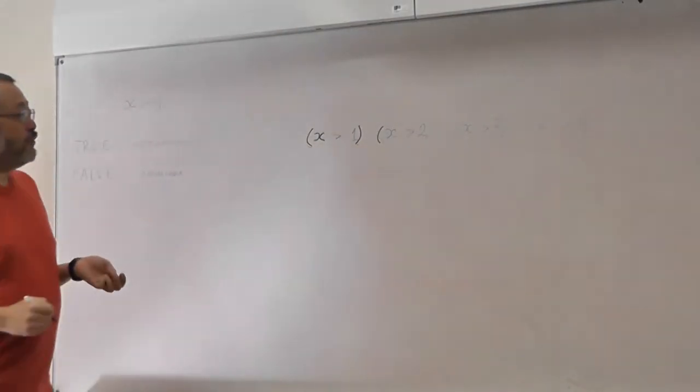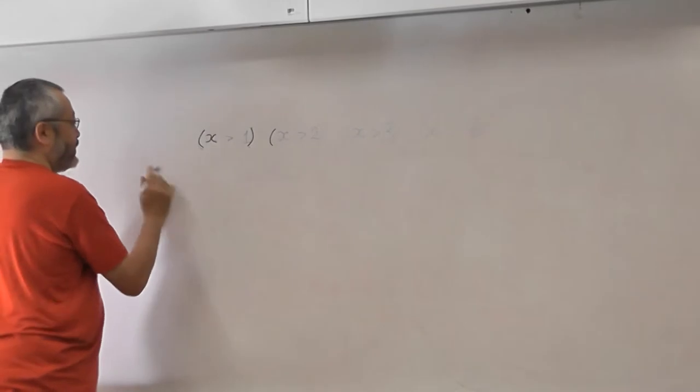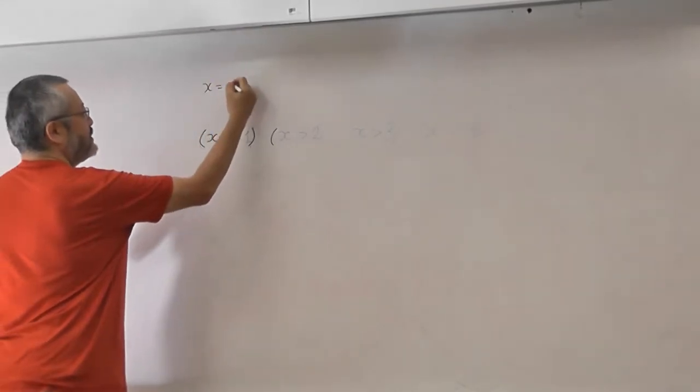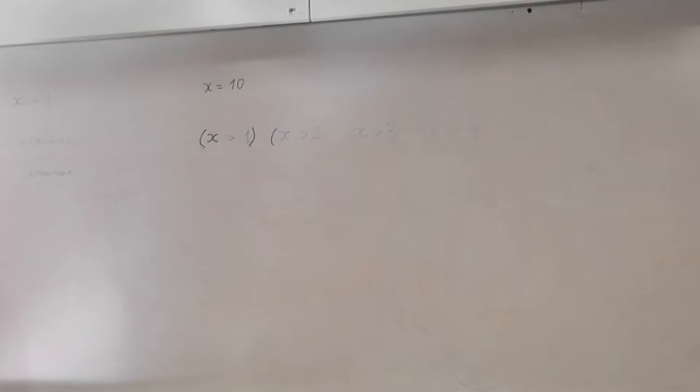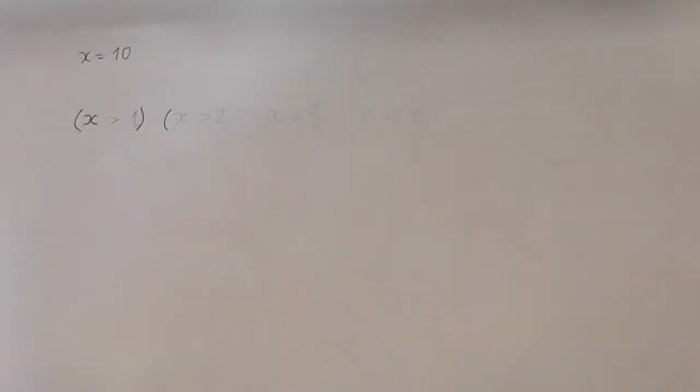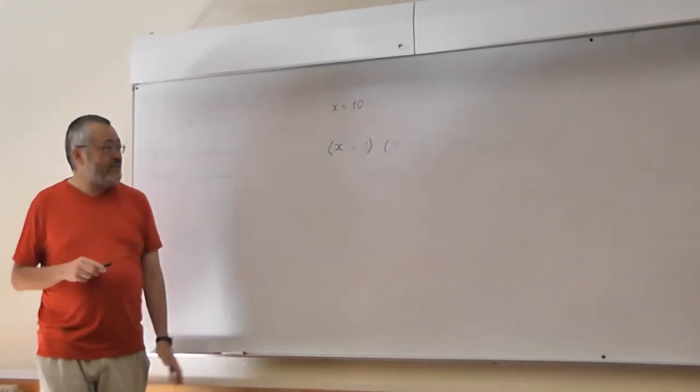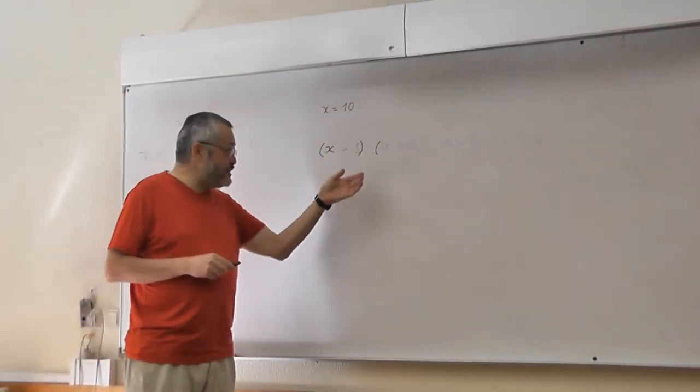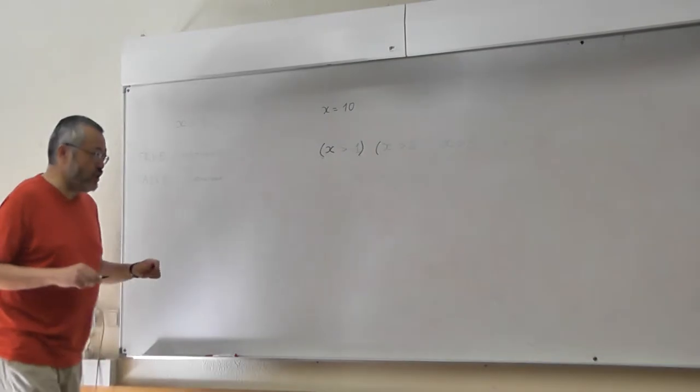For example, if x is 10, how many of them are true? Yeah? Four. All four are true. And, for example, when are they all false? When x is zero? For example, when x is zero, then all four statements are false.